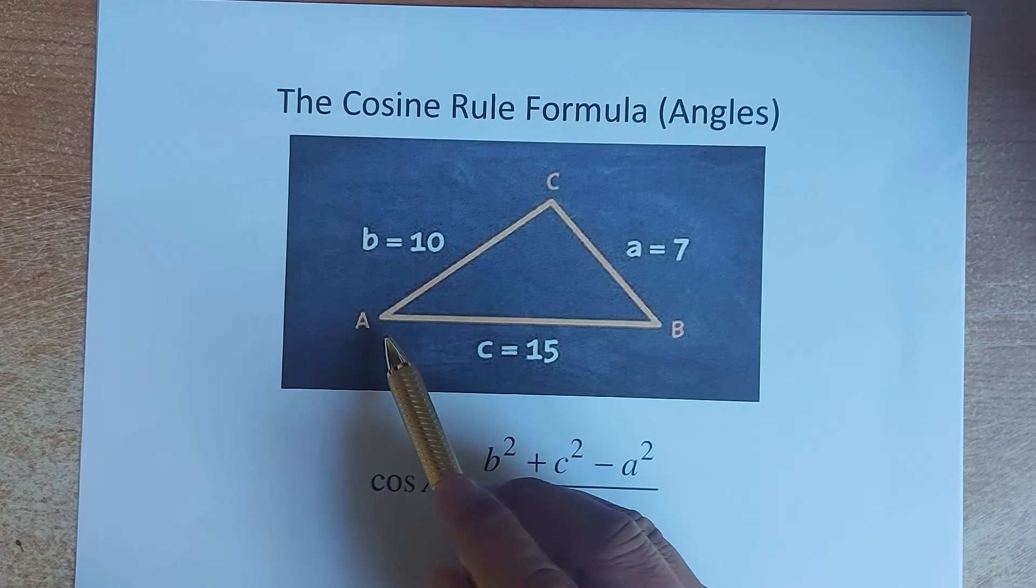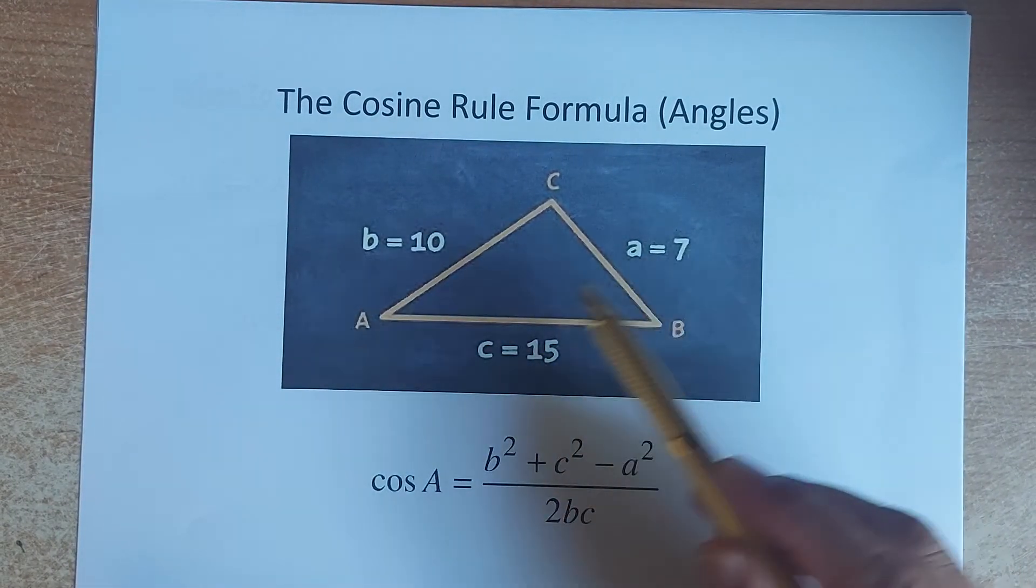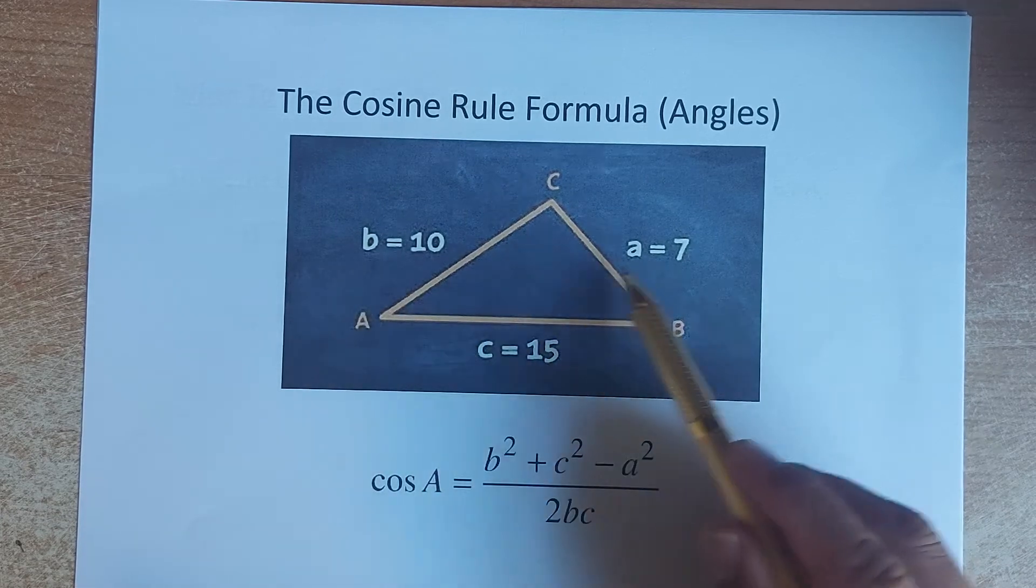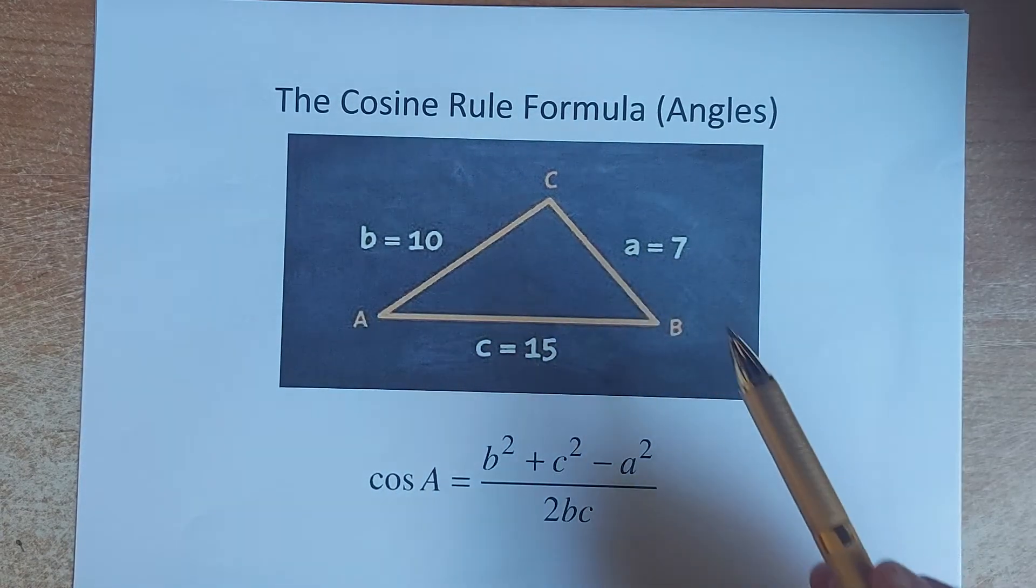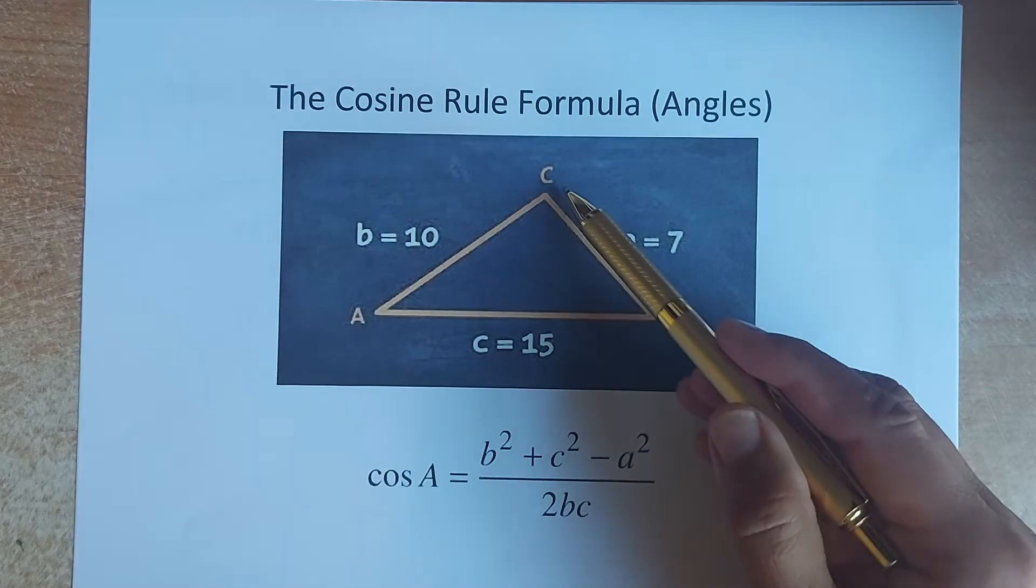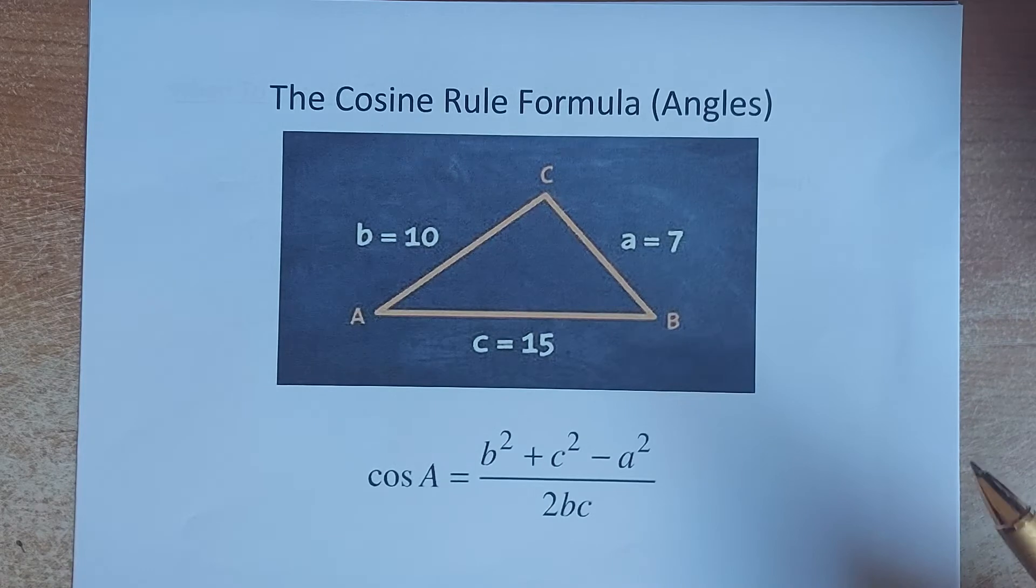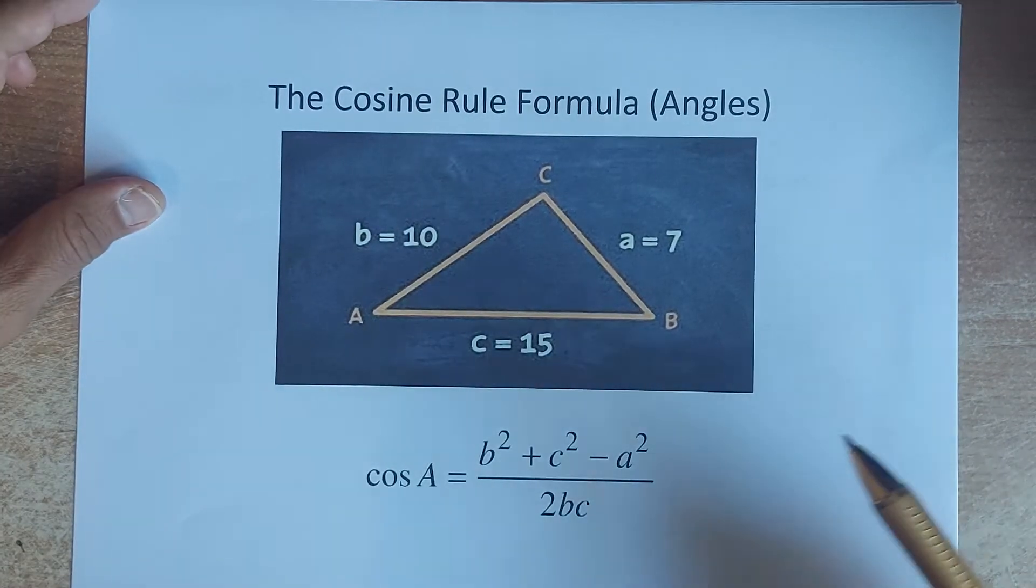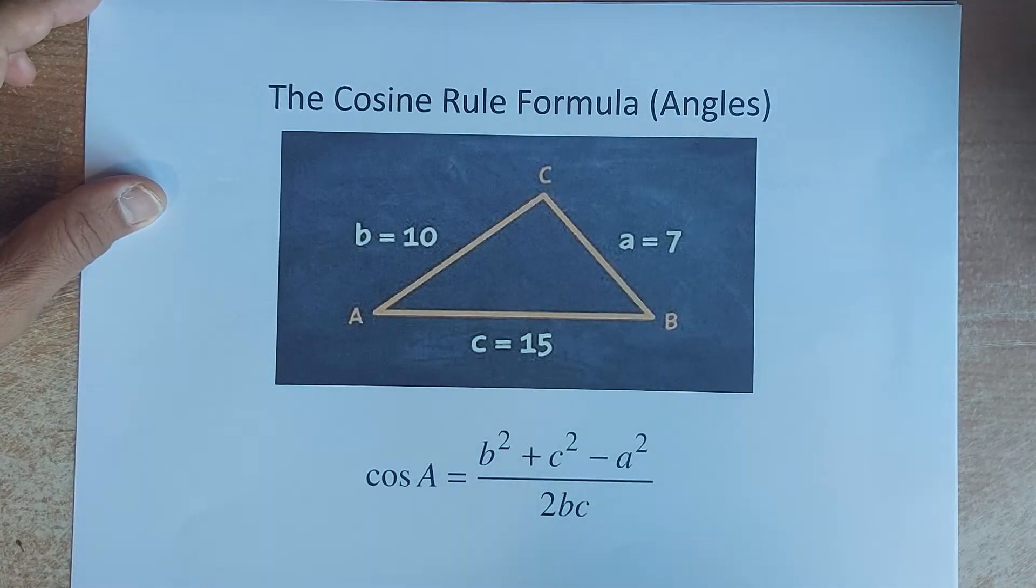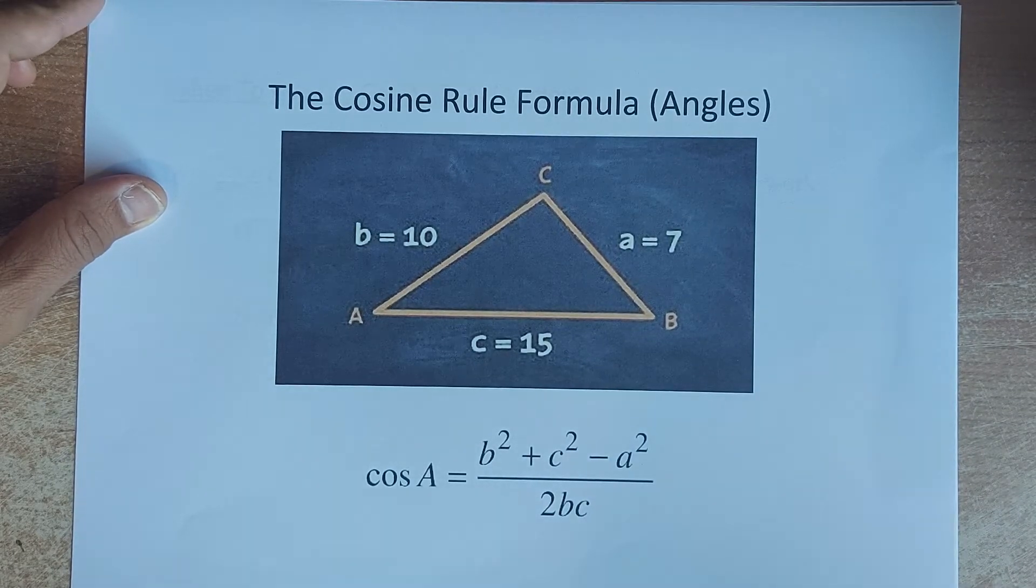The rule is that A, B, C are the angles and the sides opposite angle A is written as lowercase a. The side opposite angle B is lowercase b, and the side opposite angle C is lowercase c. Now, the rule is that to do this, you need to have three known values and one unknown. You are looking for the angle.